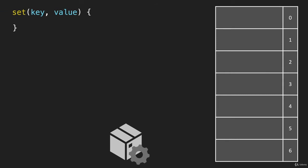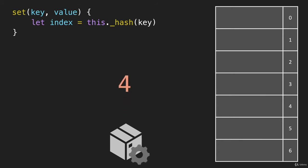Our set method is going to take a key and a value. The first thing we need to do is figure out the index where we're going to store this key-value pair. So we'll have a variable called index, and it'll be equal to this.hash — we pass it the key, which gets run through the hash method. That is going to produce the number 4, so the variable index will be set to 4.